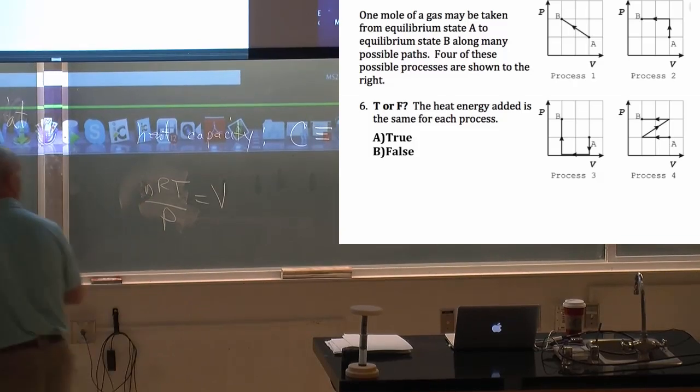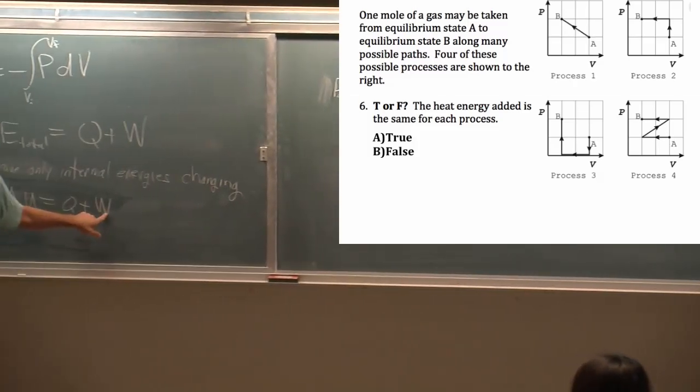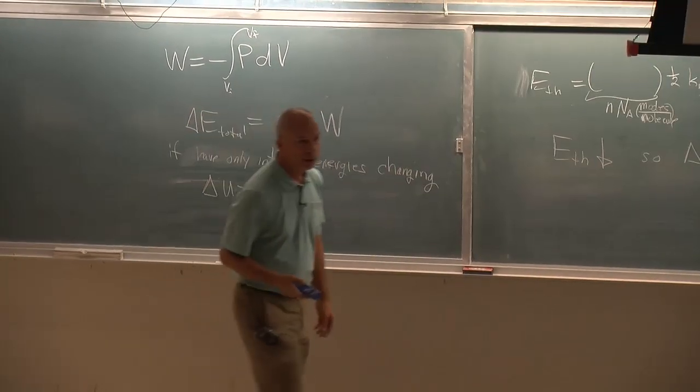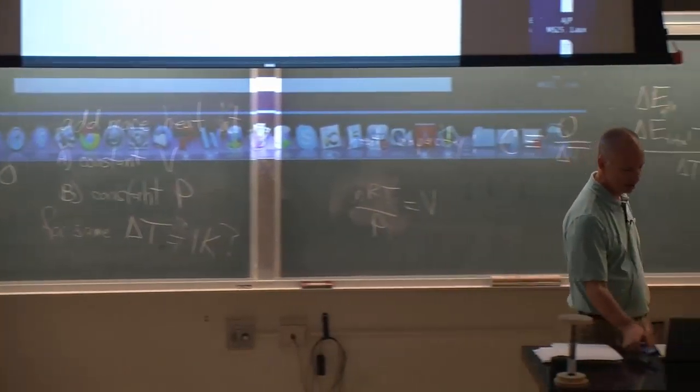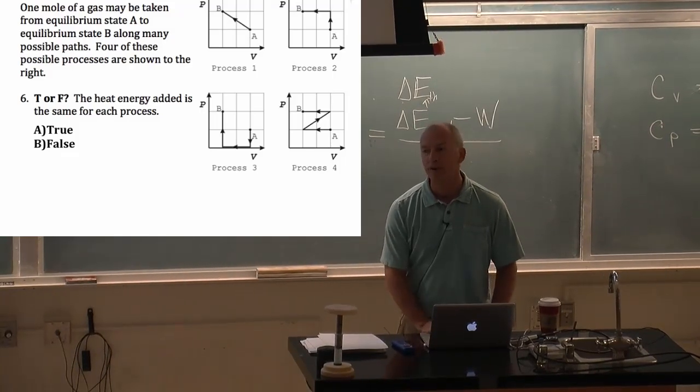Well if delta U is the same for all the processes, but W is different, and Q is different. Different amounts of heat. So that was another false. W and Q were both falses.